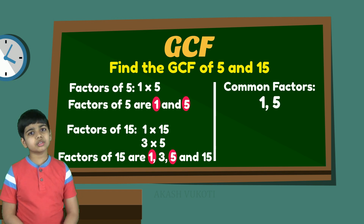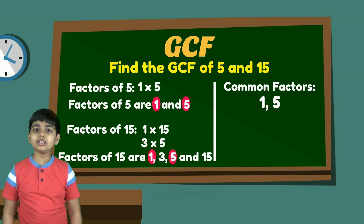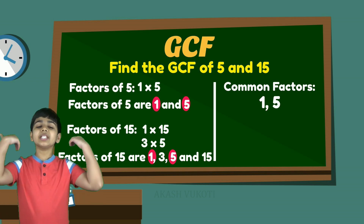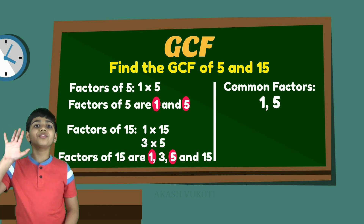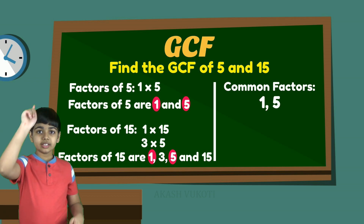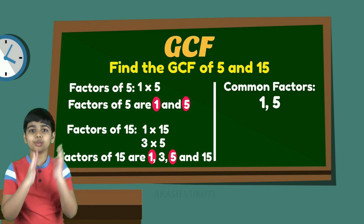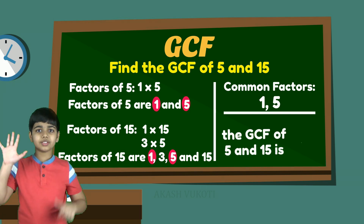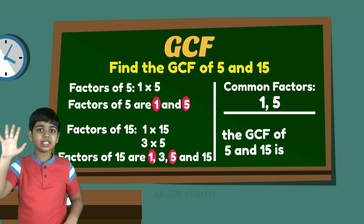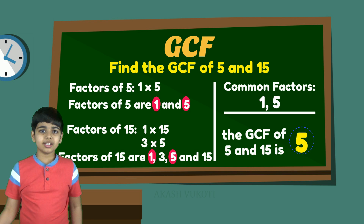Now, to find the GCF, we need to find the greatest common factor, and the greatest one is 5. So, the GCF — the greatest common factor of 5 and 15 — is 5.